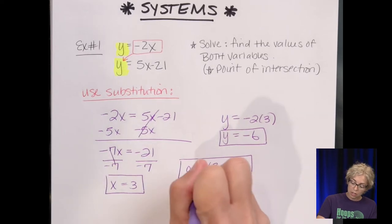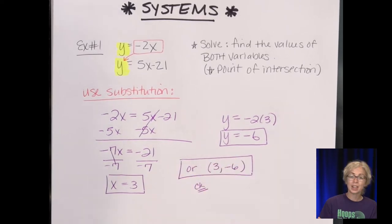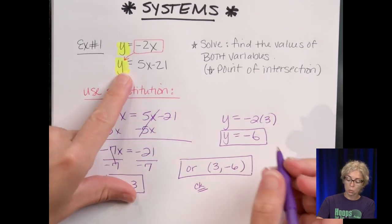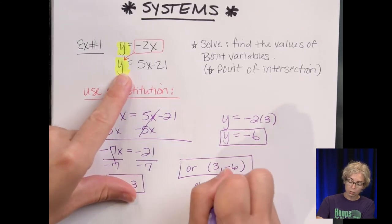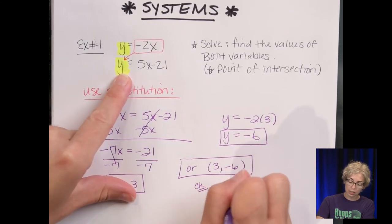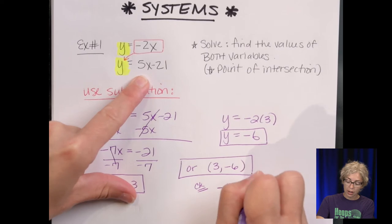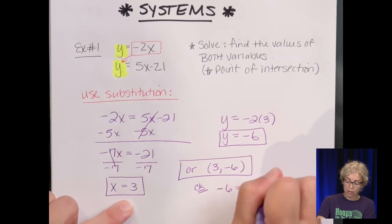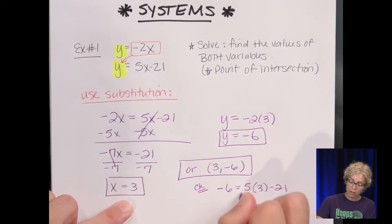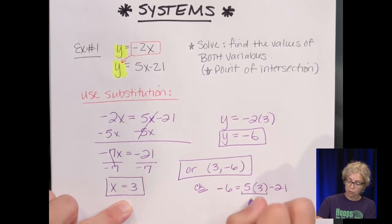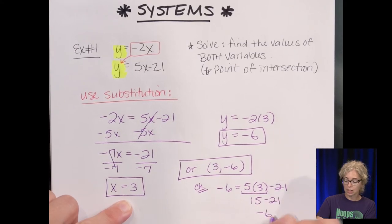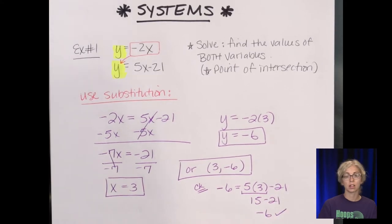I'll check in the second equation that I didn't use for substitution. Does y, which is negative 6, equal 5 times x, which is 3, minus 21? 5 times 3 is 15, and 15 minus 21 is negative 6. That checks out.